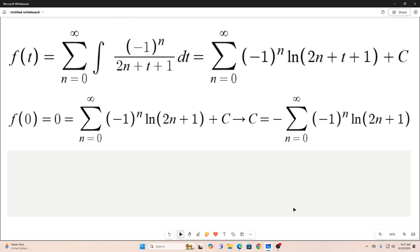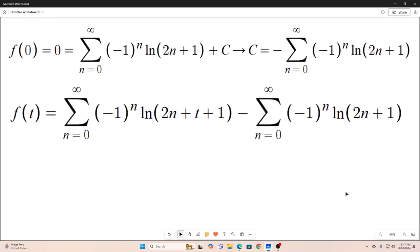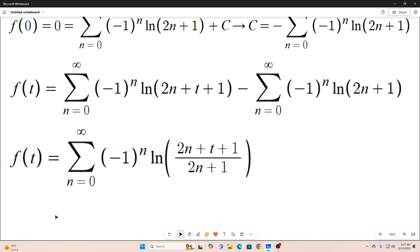So that is going to help us because now we have f of t is equal to this sum minus this sum. And we can use the properties of logarithms to bring these sums together like this. So this is our f of t. This is what f of t turns out to be. And this sum does converge.